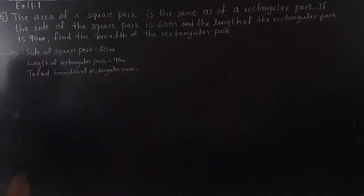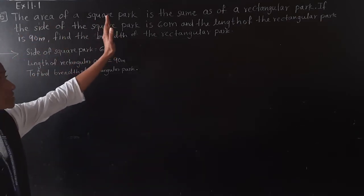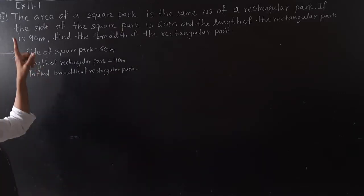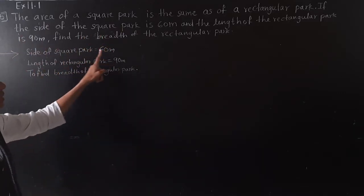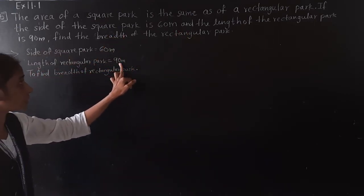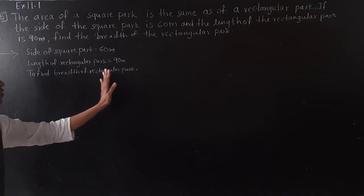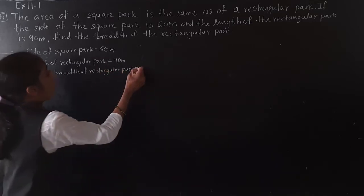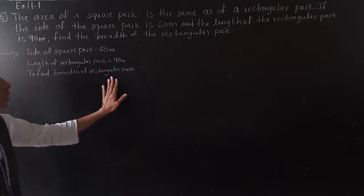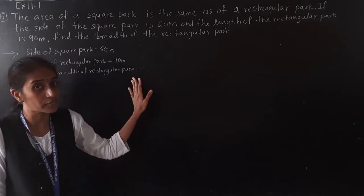So these are the given things: area of square park is same as area of rectangular park, side of square is given 60 meter, length of rectangular park is given 90 meter. What is asked is to find the breadth of the rectangular park.